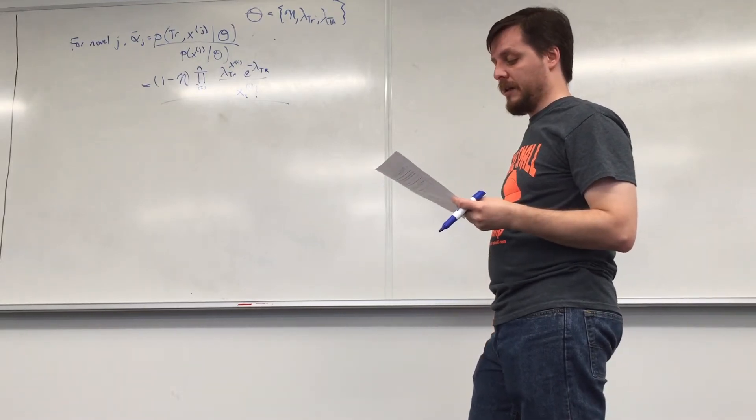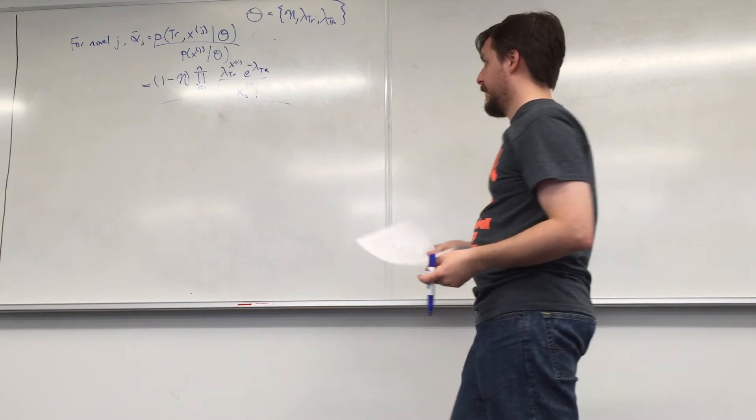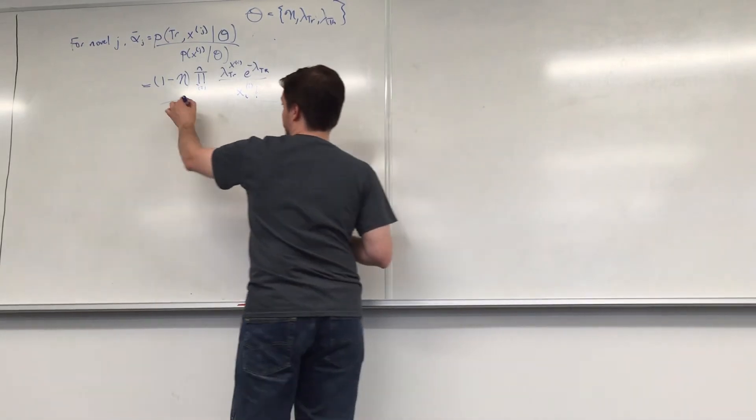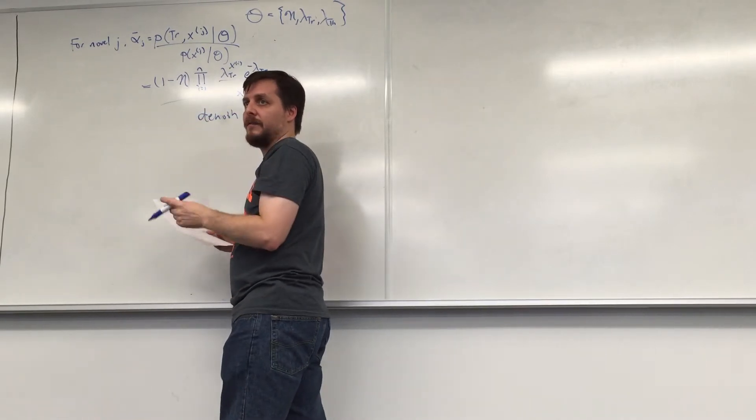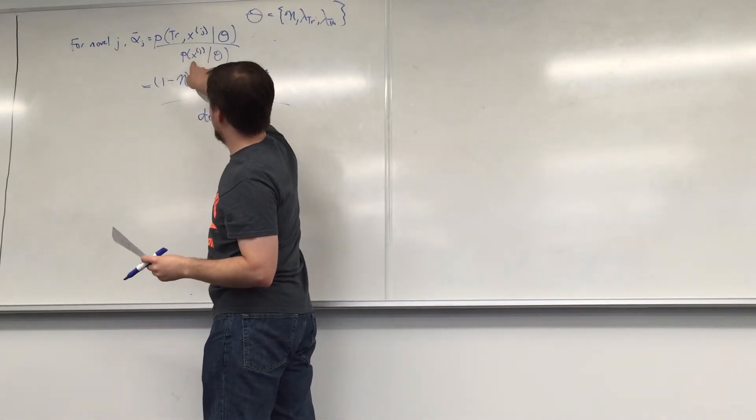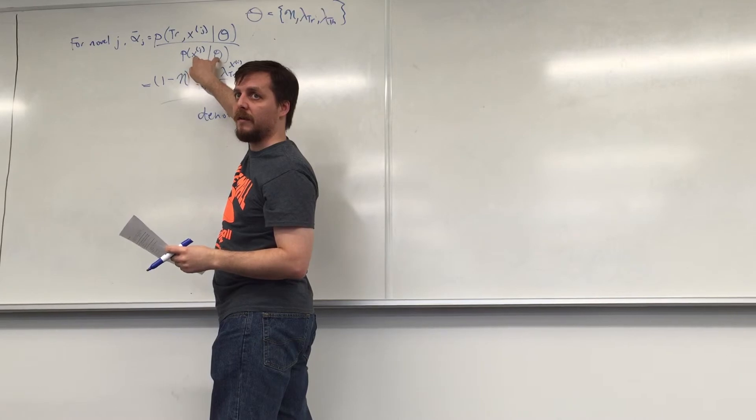And then based on that, you can compute the log likelihood. There's a denominator here, I don't want you to think. It's just the eta and the one minus eta, the same version, right? You can see this, right?